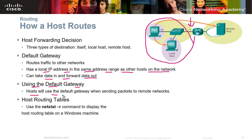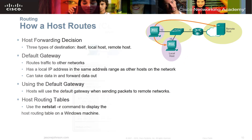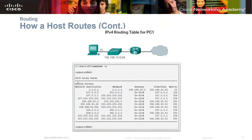Hosts use the default gateway when sending packets to remote hosts. You can use the netstat -R command to display the host routing table on a Windows machine — Linux and Mac have the same capability. This is what a routing table on a Windows machine looks like: it shows the table that's been built up, IP addresses, and the interfaces they map to.